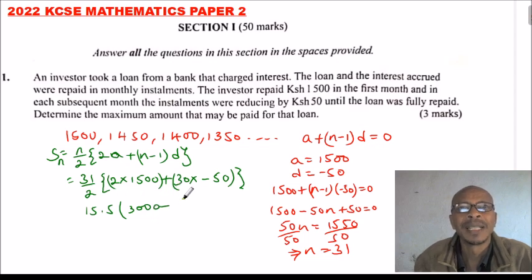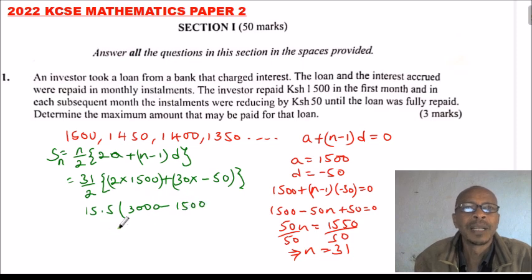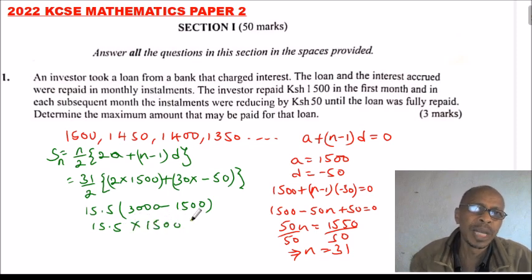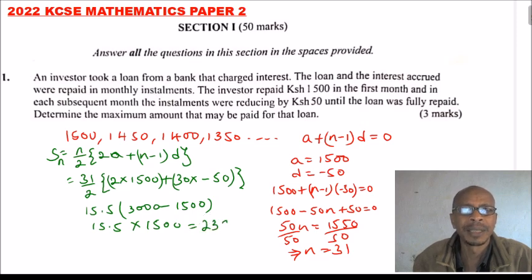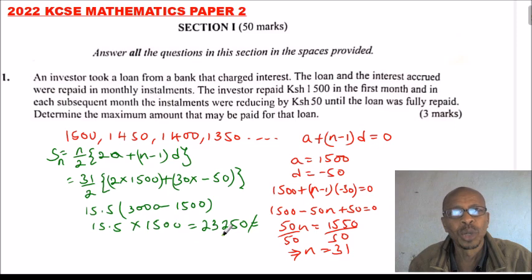This will be 3000 minus 1500, so it means we multiply 15.5 by 1500. When you do that, you should be able to get 23,250 using your calculator. This is the total amount of loan that was to be paid.